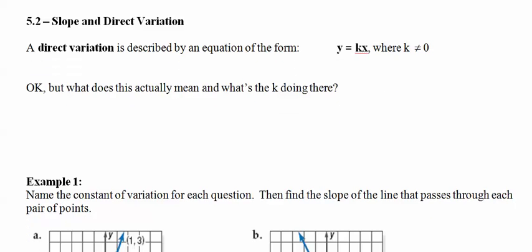So slope and direct variation feels like, oh, it's another subject. It's not. Direct variation is just the slope. And now we use K for German constant. That's the slope. It just means there's no y-intercept which we'll talk about later. There's no number out here.